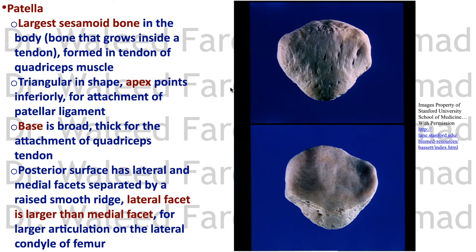The patella is a sesamoid bone — bones that grow in tendons. The patella is the largest sesamoid bone in the body. Other sesamoid bones include the pisiform, the fabella in the tendon of biceps femoris, one in the tendon of peroneus longus, and two in flexor hallucis brevis in the foot. The patella grows in the quadriceps tendon, and when shattered, the fragments stay inside the tendon unless the tendon is torn.